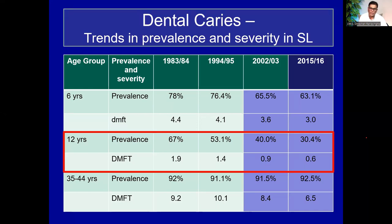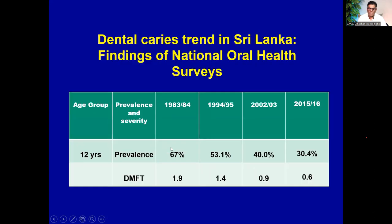These figures are from the National Oral Health Surveys conducted in 1983–84, 1994–95, 2002–03, and 2015–16, the latest one. To explain easily, taking the 12-year-old group: the prevalence of dental caries has drastically declined — it was 67% in 1983–84 and 30.4% in 2015–16. And the DMFT, the caries experience — average number of teeth decayed in a mouth — was 1.9 in 1983–84 and has reduced to only 0.6 in 2015–16.